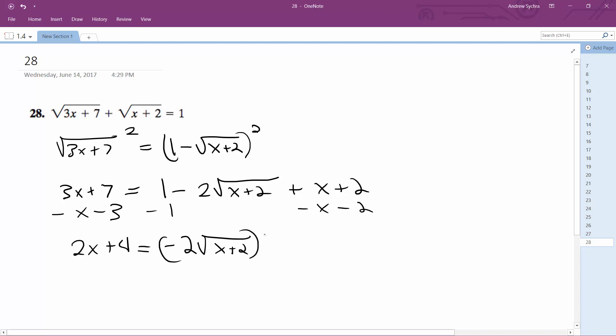Square both sides, I end up with 4x squared plus 16x plus 16 is equal to 4 quantity x plus 2.